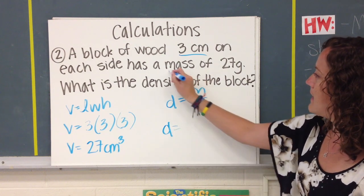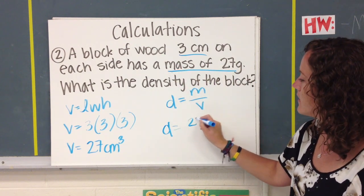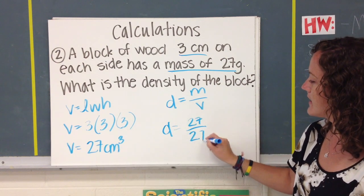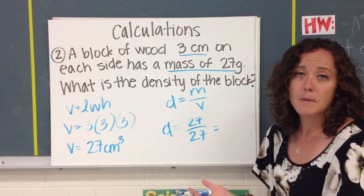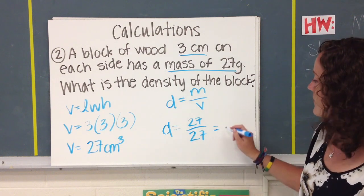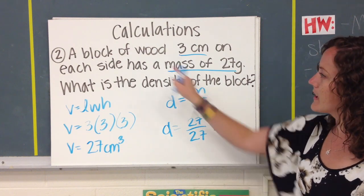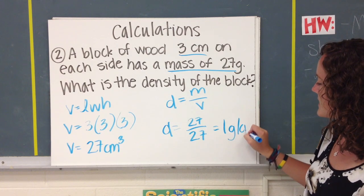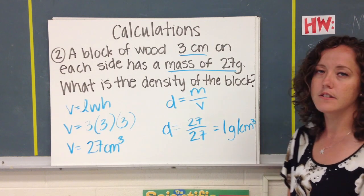It tells us the mass is 27 grams, and we can take the volume from over here, and that's also 27. So if we divide a number by itself, we always end up with 1. And this time we're working with wood, it's a solid, and so we would use grams per centimeters cubed for our unit. One last one to work with together.